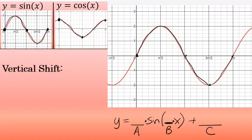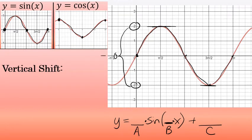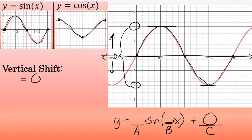Next, we'll determine if the curve has a vertical shift. To identify the vertical shift, I look at the wave's highest point, which is 2, and the wave's lowest point, which is negative 2, and go halfway between those values. Halfway between negative 2 and 2 is 0, which is just the x-axis. So this wave is not shifted up or down — the vertical shift is 0, and the value of c is 0. I will not include a plus 0 in the final equation.